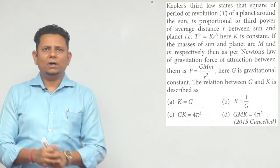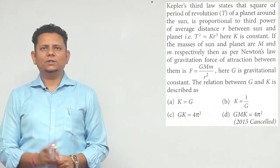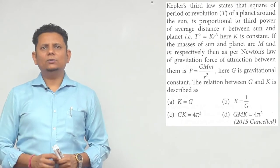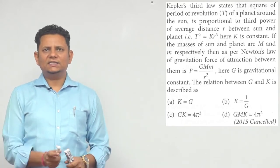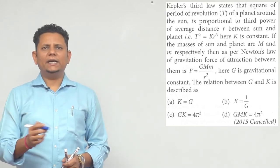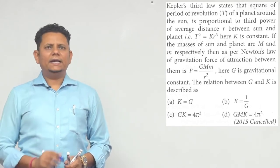Kepler's third law states: the square of period of revolution T of a planet around the sun is proportional to third power of the average distance r between sun and the planet, i.e. T² = Kr³. Here K is a constant.